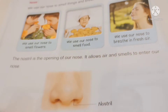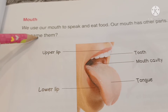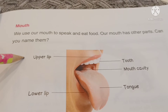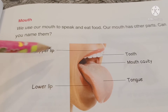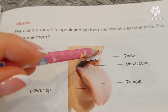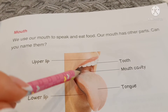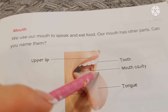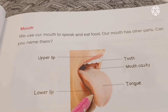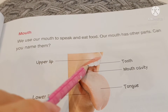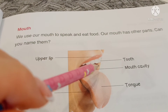So that's about the nose. What about the mouth? We use our mouth to speak and eat food. Our mouth has other parts — can you name them? So many parts! This is the upper lip. This is the tooth. This is the mouth cavity. This is the tongue. And this here is the lower lip.